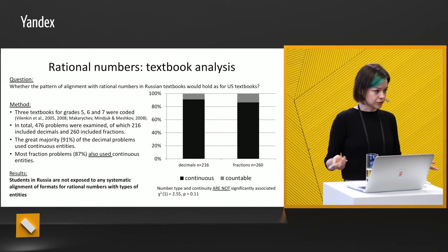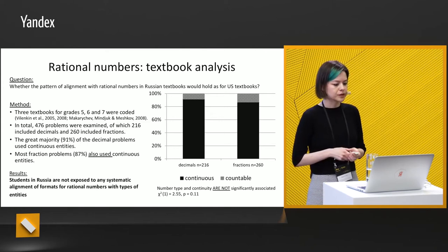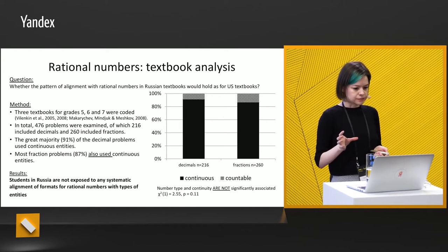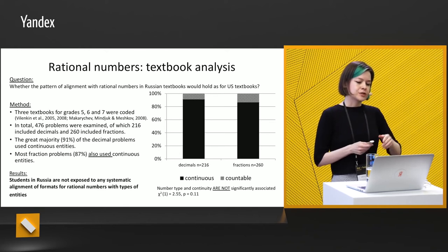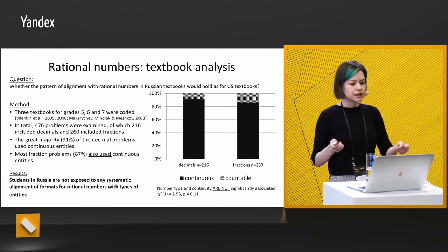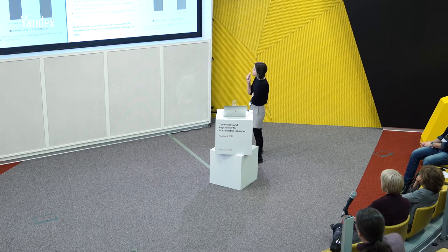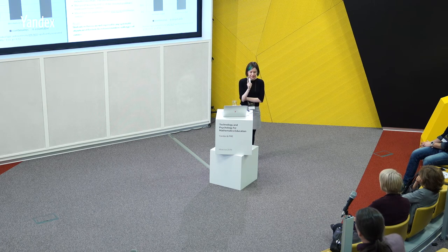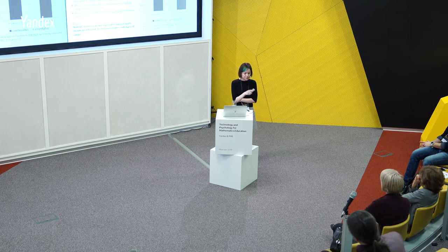It was shown that for continuous entities there is no preference of rational number type — it doesn't matter what kind of entities are included; both decimals and fractions appear regardless of whether entities are continuous or discrete. This situation with word problems is very different from the situation in the US — Russian word problems with rational numbers are not aligned as supposed.